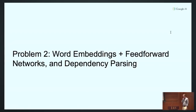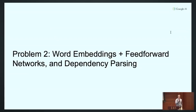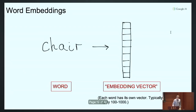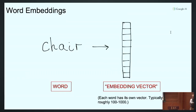The second problem is dependency parsing, a particular type of syntactic analysis. Here I want to go up a level of complexity and introduce word embeddings. This is partly based on work at Google with Daniel Andor, Chris Alberti, and others. The first key innovation that really made neural networks work on natural language problems — something you don't see in speech or vision — is word embeddings.